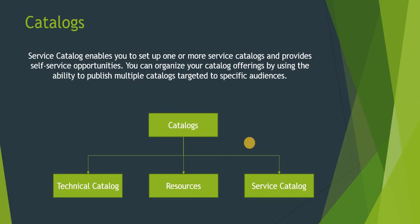Next is catalogs. Service catalog enables you to set up one or more service catalogs and provide self-service opportunities. You can organize your catalog offerings by publishing multiple catalogs targeted to specific audiences. There are some out-of-the-box catalogs as well, such as the technical catalog and the service catalog, and under these you can build categories and items. This is a way to segregate everything.